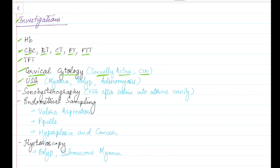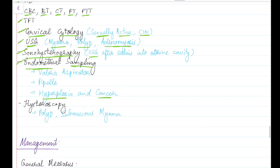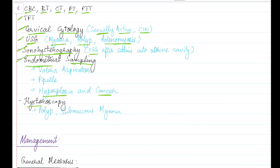Ultrasound should be done to rule out myoma, polyp, and adenomyosis. Sonohysterography can be done if myoma or polyp is suspected — it is performed after saline infusion into the uterine cavity. Endometrial sampling can be done to rule out hyperplasia and cancer of endometrium. Hysteroscopy can be done if polyp or submucous myoma is suspected.